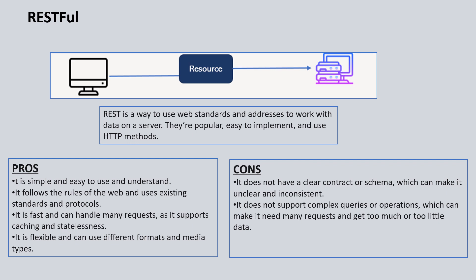REST follows the rules of the web and uses existing protocols and standards. It is fast and can support multiple requests because caching is utilized and it is stateless, so every transaction is independent of each other. It is fast because of the caching mechanism and stateless nature. It also supports various formats — JSON is the most popular, but XML and a few others are also utilized.